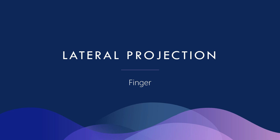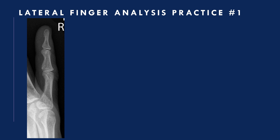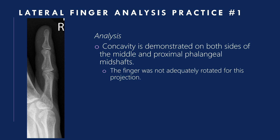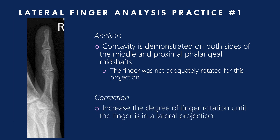Lateral projection of the finger: here are examples of accurate positioning for the lateral projection. Analysis practice one: concavity is demonstrated on both sides of the middle and proximal phalangeal shafts — the finger was not adequately rotated. Correction: increase the degree of finger rotation until the finger is in a true lateral projection.